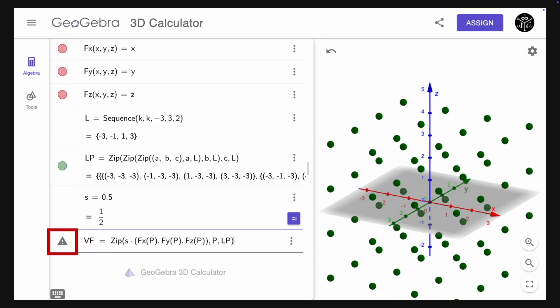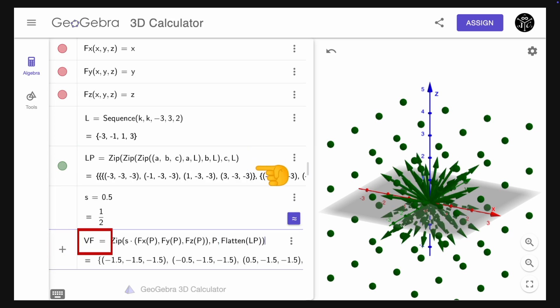Unfortunately, GeoGebra gives us a warning or an error, as you can see here. The issue is that the list LP is a 3D array. The issue can be solved by using the flatten command, so the 3D array becomes a simple list.